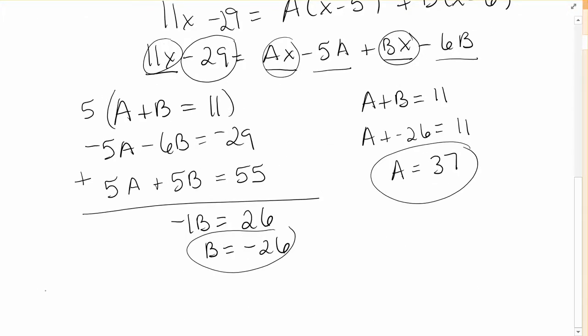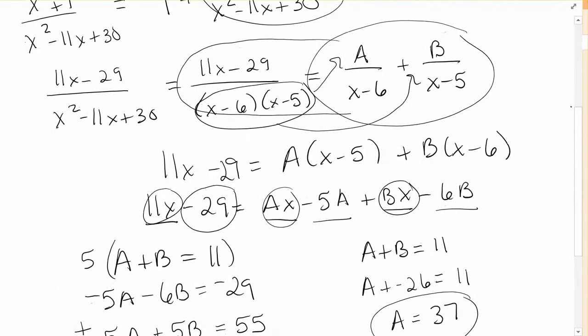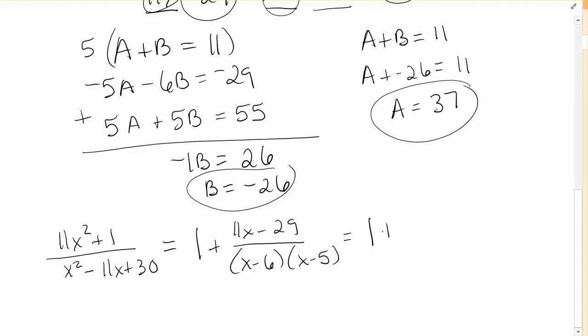So remember we had 11x squared plus 1 divided by x squared minus 11x plus 30. We found that to be 1 plus 11x minus 29 over, the denominator was x minus 6 times x minus 5. And our a was over x minus 6, so we said this is the same as 1 plus a which is 37 over x minus 6 plus b, but b is negative, so minus 26 over x minus 5. So that's how we can complete that problem.